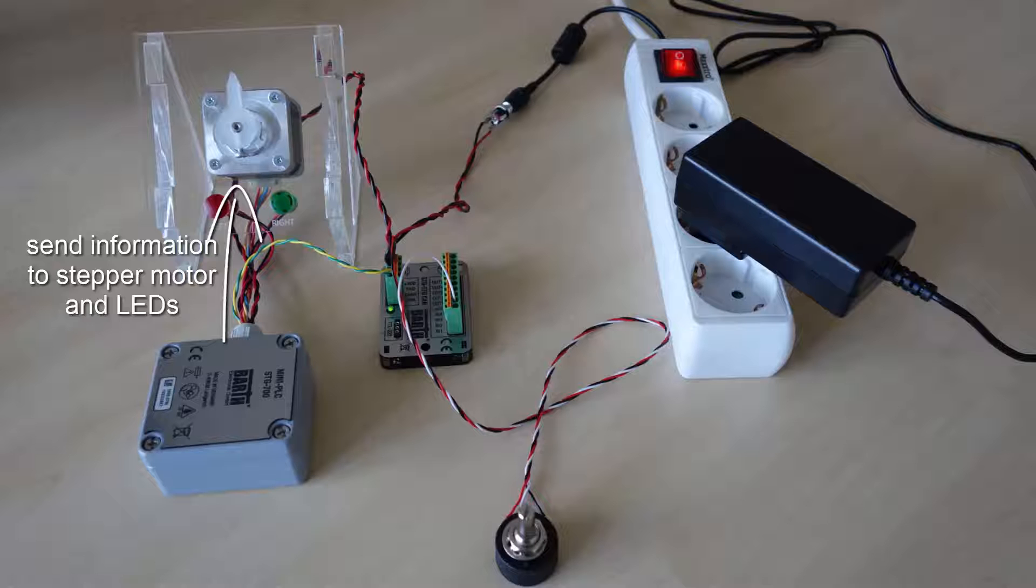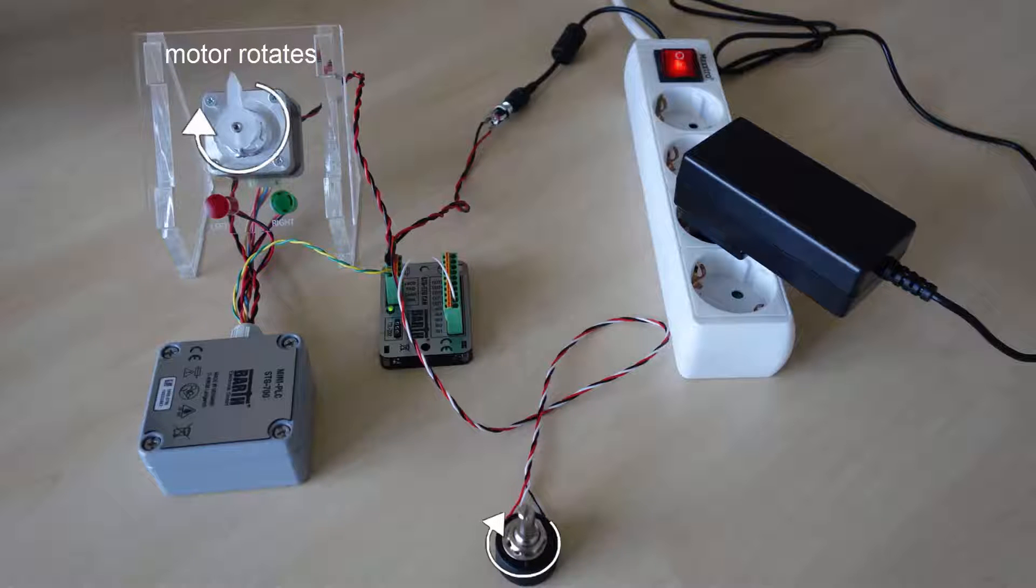So when twisting the potentiometer here to the right, the green LED will light up and when twisting to the left, the red LED will light up.